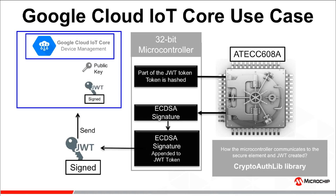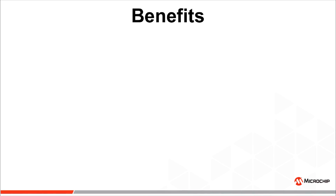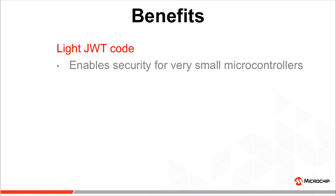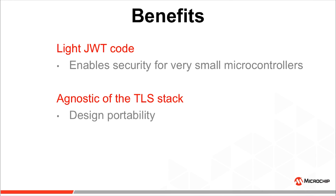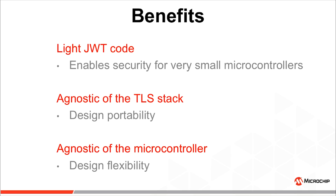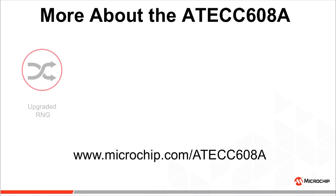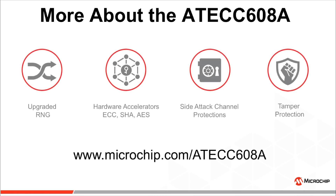Now the full chain of trust is closed. The benefits: the JWT implementation offers very lightweight code that enables security for very small microcontrollers. The solution is completely agnostic of the TLS stack, offering design portability, and completely agnostic of the microcontroller, offering design flexibility. To know more about the ATECC608A, please visit us at microchip.com/ATECC608A. Thank you very much.